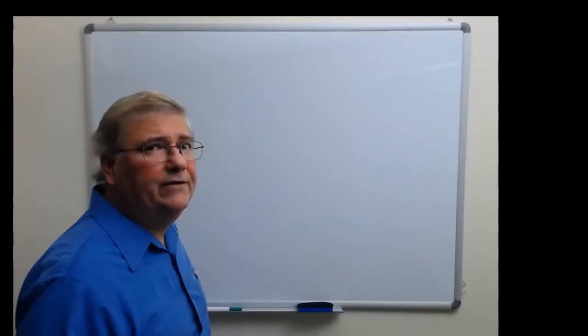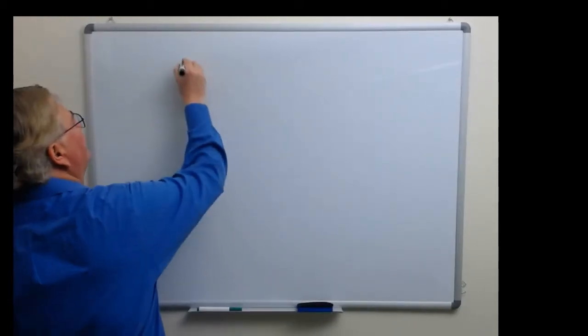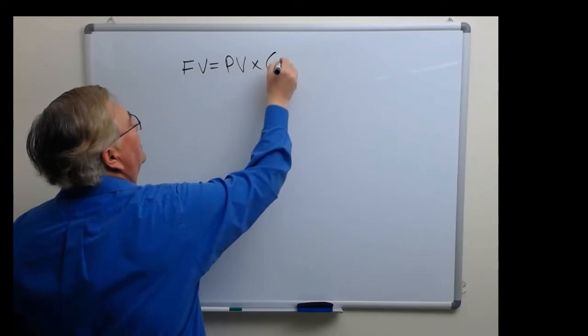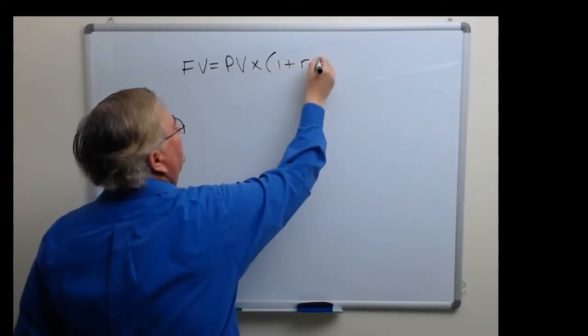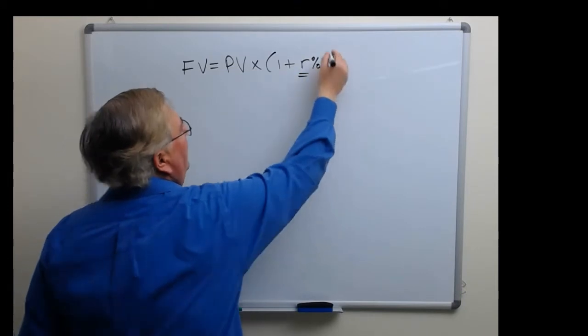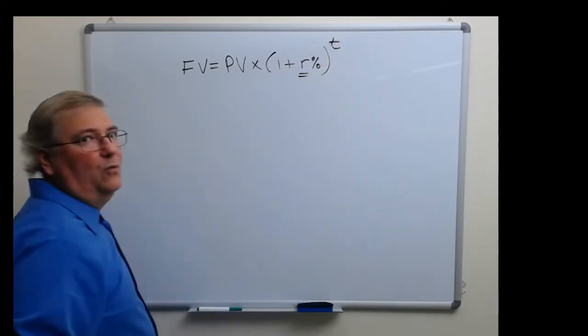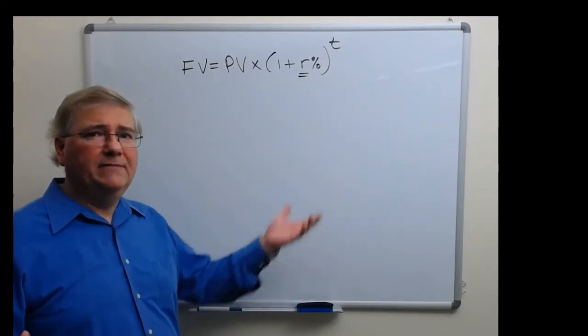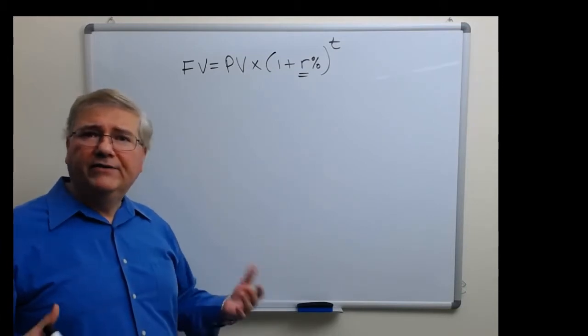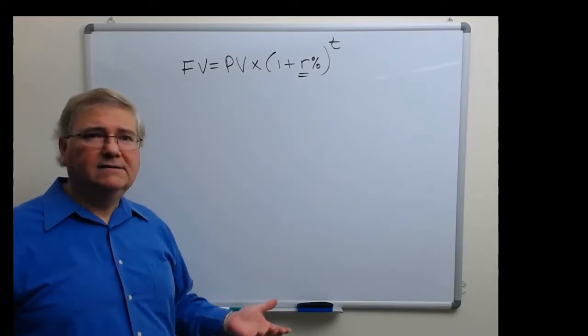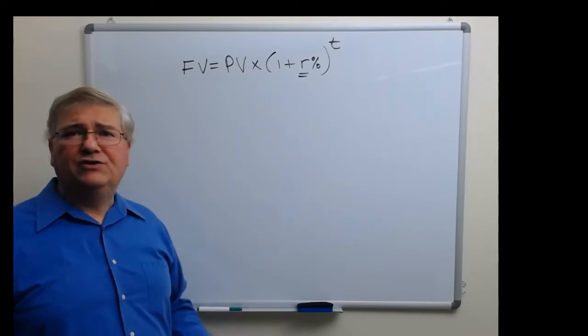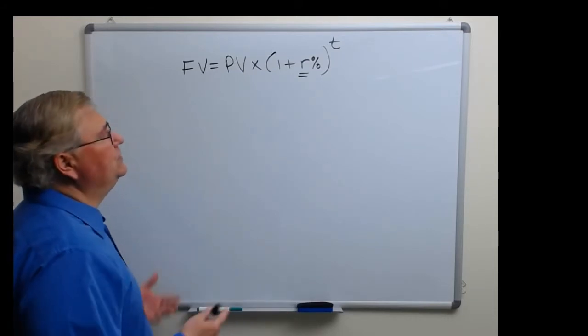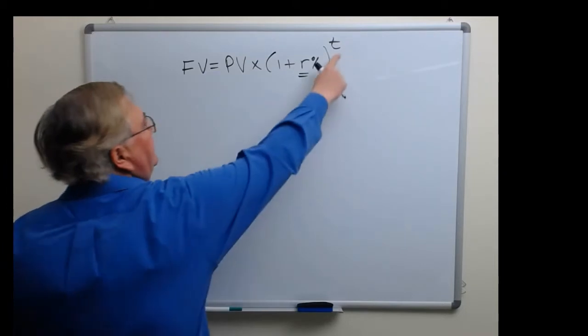So let's write out the future value formula again. FV for future value is equal to the present value multiplied by one plus some growth rate, which is assumed to be constant over time, raised to the t power, where t represents the number of periods going into the future. Now the period of time t can be a year, it could be months, it could be weeks, it could be seconds in the case of biological growth rates, let's say for fruit flies in a petri dish in a biology lab. But usually in the case of investing you'll find that t is representing years of investment.